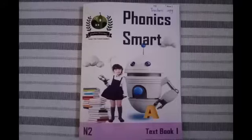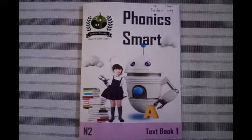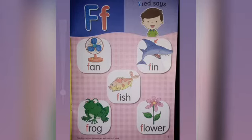Children, now please take out Phonicsmart N2 Textbook 1. Children, now turn to page number 7. Make sure you circle the page number 7.